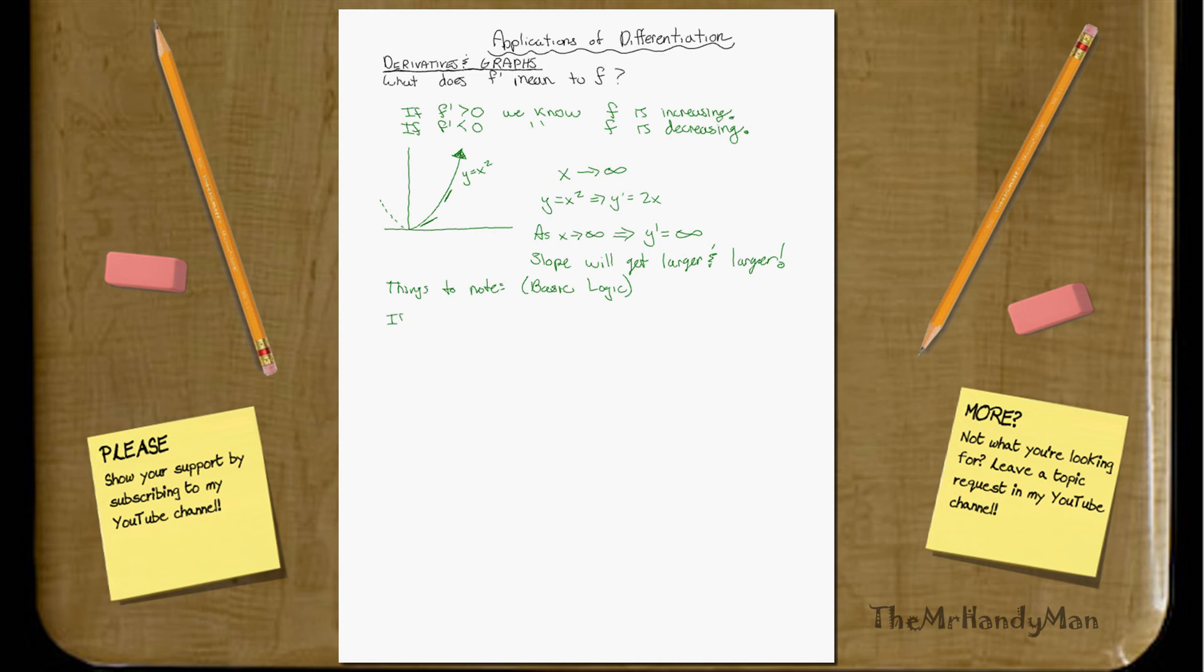Now, let me write that down, so that way we don't forget. If f prime goes from positive to negative, that means, think about it, you have a positive slope to a negative slope. You go up to down. You have a max, a max point.